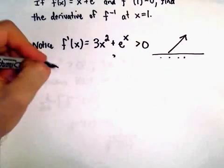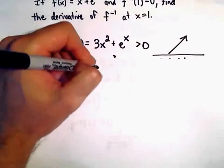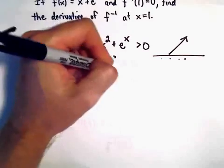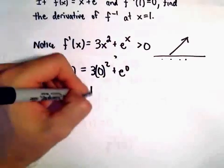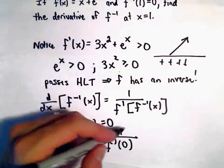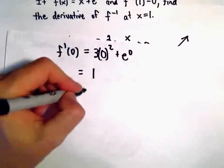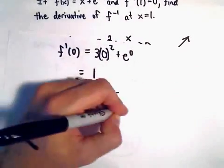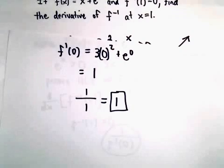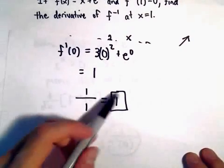So notice f prime of 0 is just going to give us 3 times 0 squared plus e to the 0, which is going to give us 1. So that says when we plug it into this part, we'll just be left with 1 over 1, or we'll get 1 as the value of the derivative at that point.